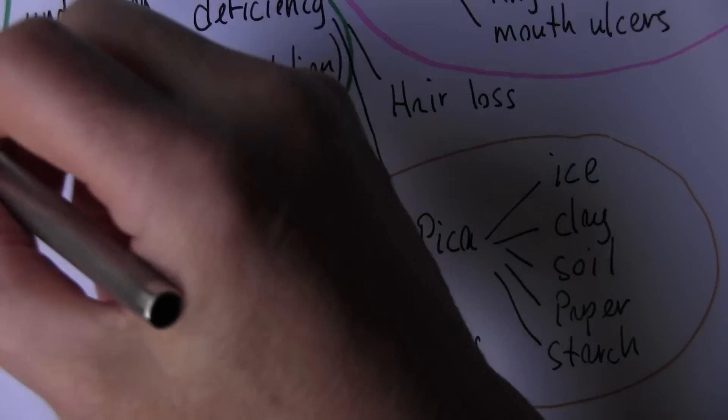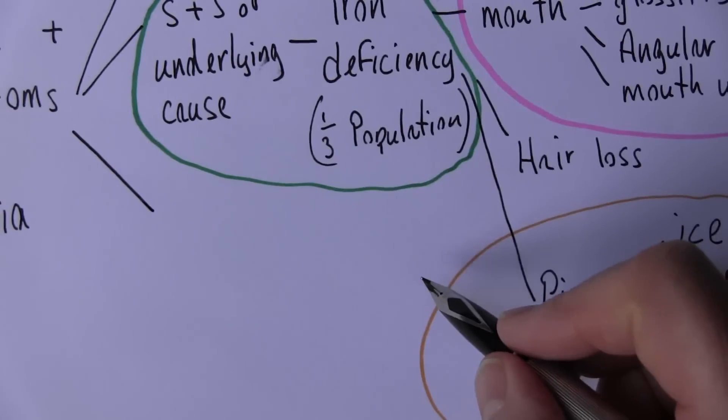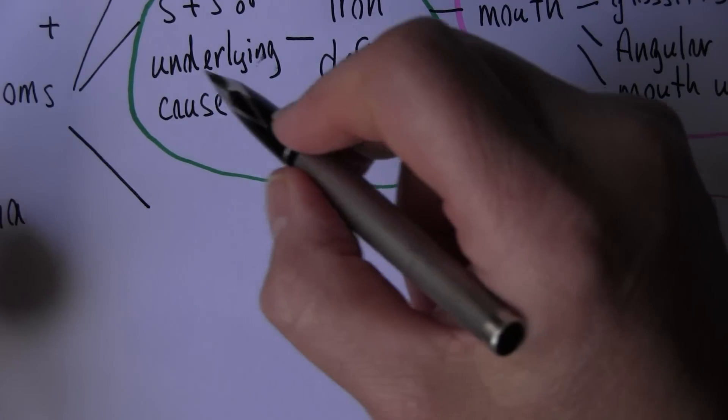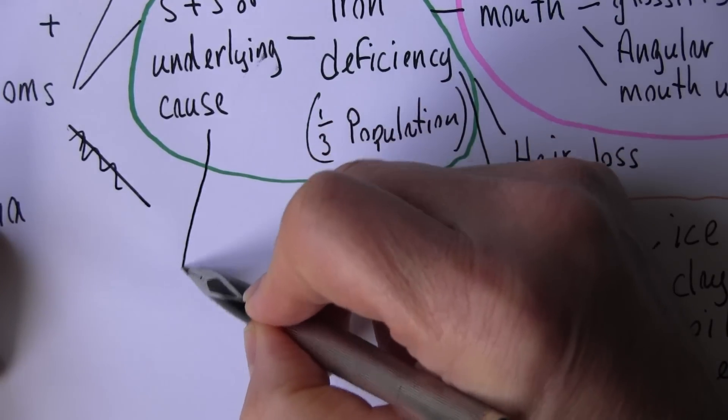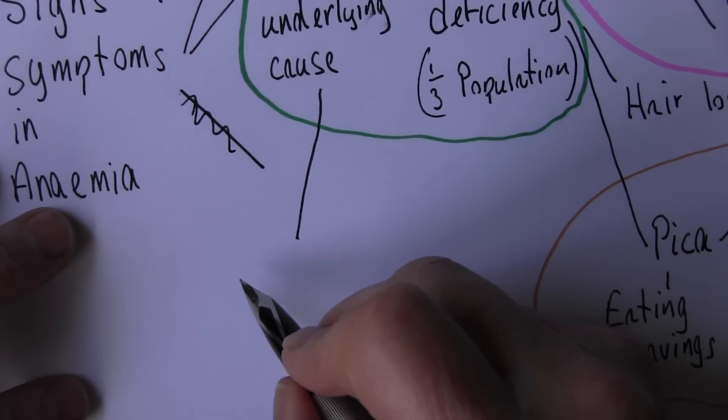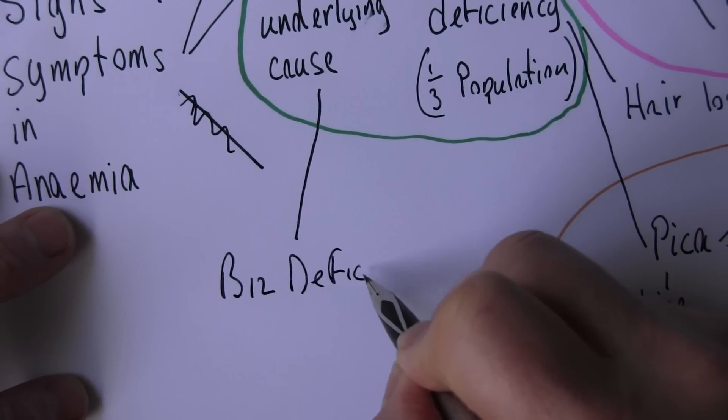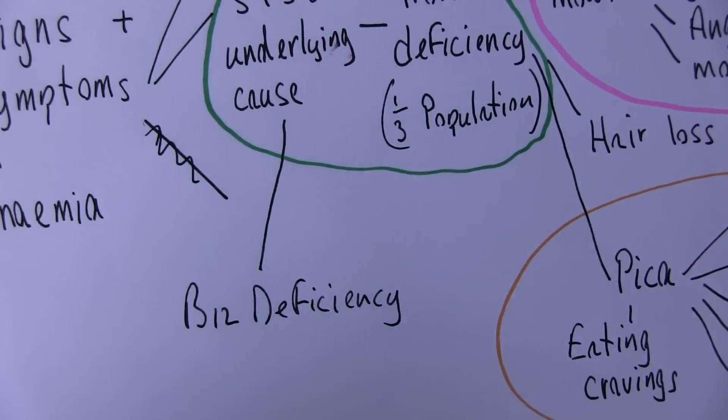But we can go on and look at other signs and symptoms of anemia. So other signs and symptoms not related to the anemia, other signs and symptoms related to the underlying cause. And another one of these causes is B12 deficiency. So we'll carry on this on a separate piece of paper I think.